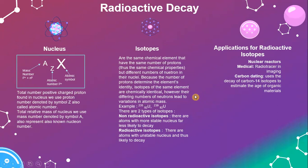Isotopes are the same chemical elements that have the same number of protons, and thus the same chemical properties, but a different number of neutrons in the nucleus. Because the number of protons determines the element's identity, isotopes of the same element are chemically identical. However, the different number of neutrons leads to variation in atomic mass. For example, uranium has isotopes with different mass numbers — one is 235 and the other is 238.